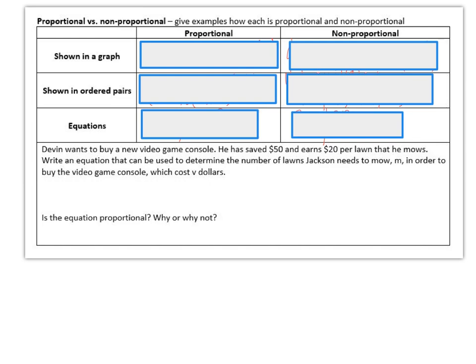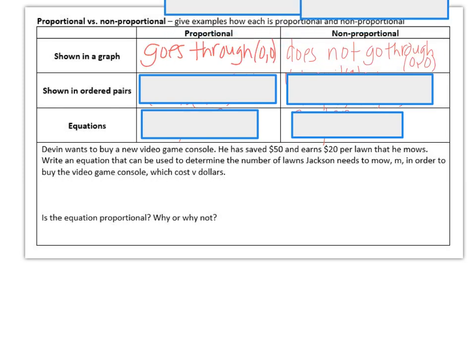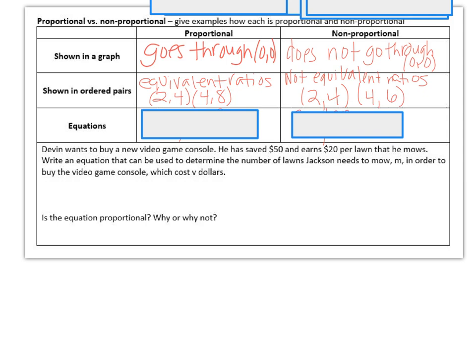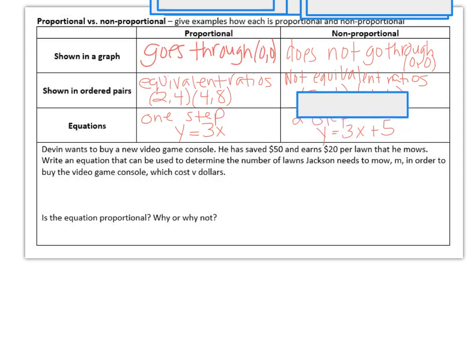Proportional versus non-proportional. So on a proportional line or equation, on a graph, we know it's proportional if it goes to the origin and it's non-proportional if it does not go through the origin. In the ordered pairs, we know it's proportional if they are equivalent ratios, like 2 to 4 can be proportional to 4 to 8. And we know that it's not proportional if the ratios are not equivalent, like 2, 4 and 4, 6. And then for an equation, we know it's proportional if it's 1 step, like y equals 3x. And we know that it's non-proportional if it's 2 step, like y equals 3x plus 5.